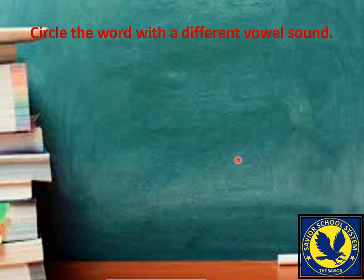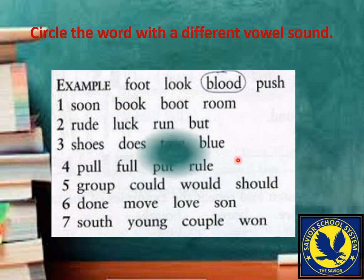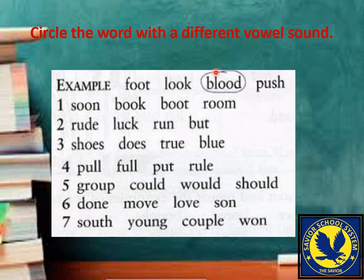اب آپ کے لیے ایک چھوٹا سا test ہے: circle the word with a different vowel sound۔ آپ کو کچھ words دیے گئے ہیں — ان میں ایک word فرق ہے اور آپ نے circle کرنا ہے کہ کون سا word فرق طرح pronounce ہوتا ہے۔ For example: 'foot', 'look', 'push' — تینوں ایک طرح پڑھے جا رہے ہیں لیکن 'blood' — اگرچہ اس میں double-o آ رہا ہے — یہ 'blood' پڑھا جاتا ہے۔ Let me read: soon, book, boot, room۔